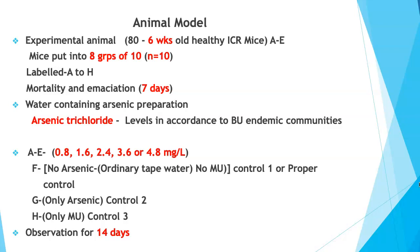To obtain arsenic-containing water, the researcher identified a Buruli ulcer endemic community in Ghana's Ashanti region. Arsenic levels in water used for drinking and domestic purposes ranged between 0.8 to 4.8 mg/L. Using this benchmark, stock solutions of arsenic trichloride were prepared accounting for mice body weight. Three control groups were set up: control one received only tap water; control two received water containing arsenic at 4.8 mg/L; control three received normal tap water plus doses of Mycobacterium ulcerans.